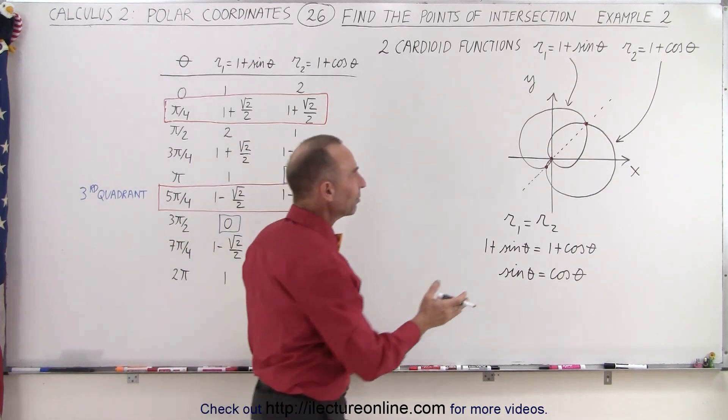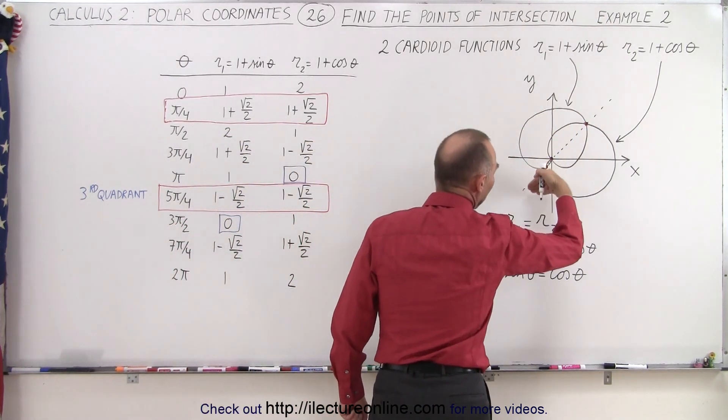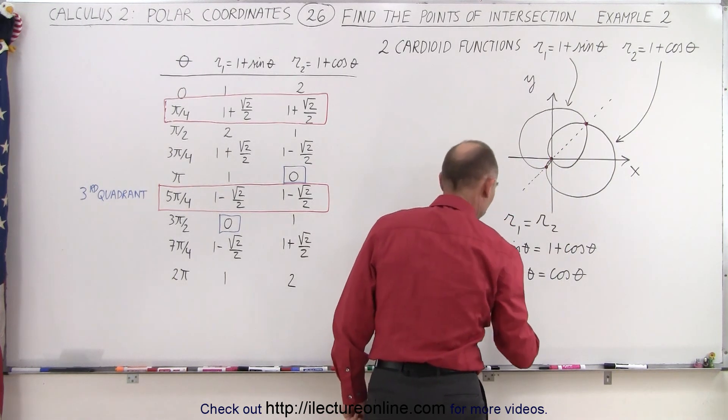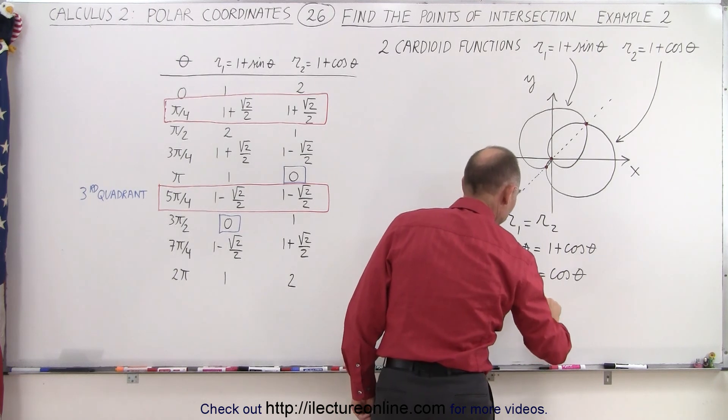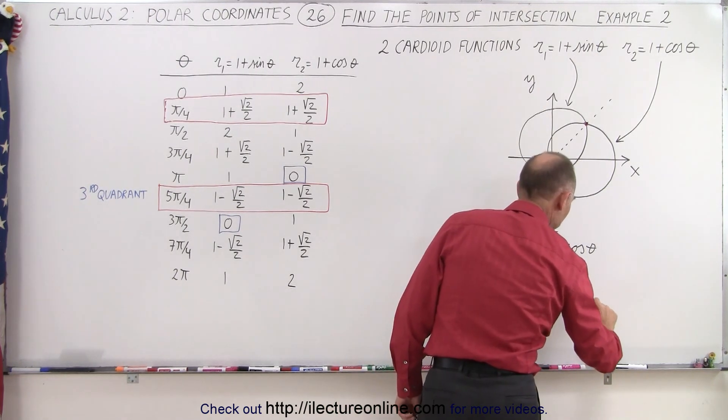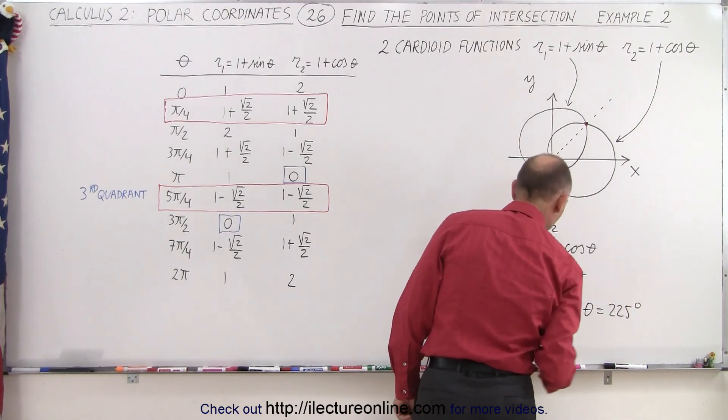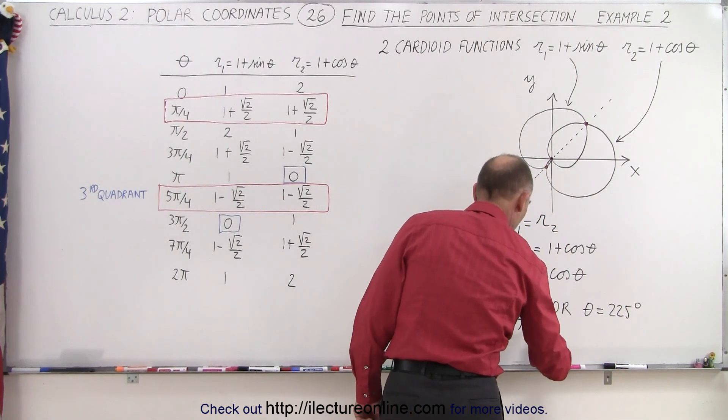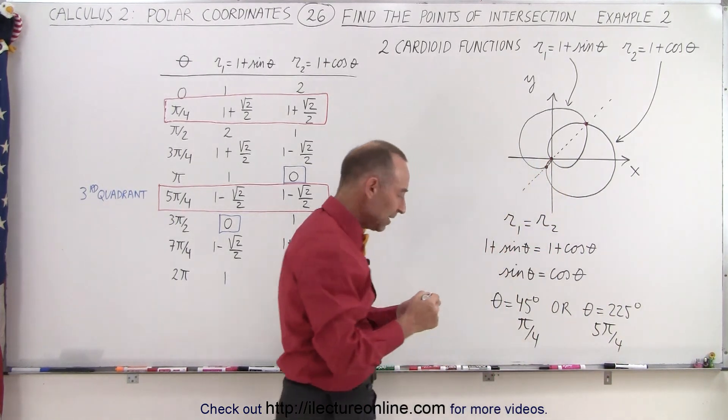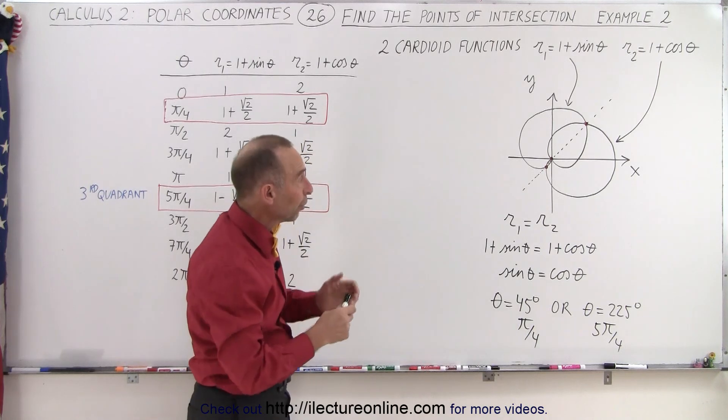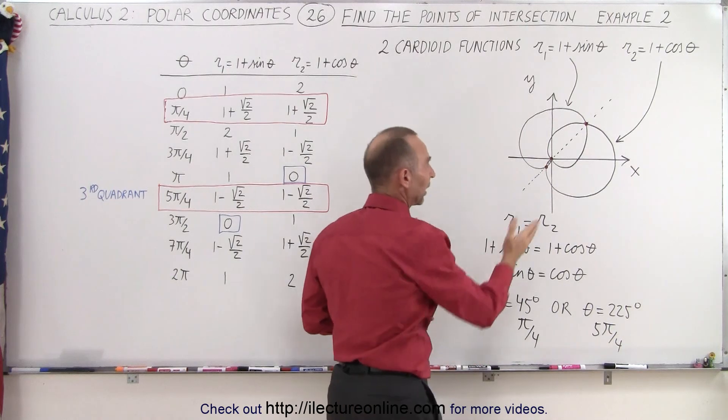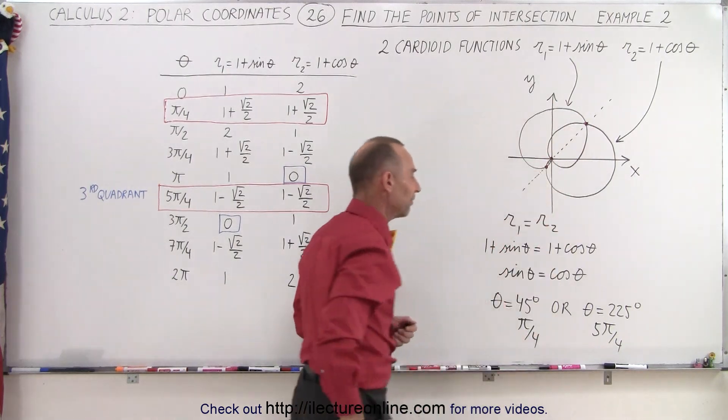So for which values is the sine of theta equal to the cosine of theta? And we know that's the case at 45 degrees, but it's also the case at 45 plus 180 or 225 degrees. In other words, theta equals 45 degrees or we have the two equal to each other again at theta being equal to 225 degrees. So it would be π over 4 and 5π over 4. So using this technique does allow us to find two of the three points of intersection. This one right here and this one down here at 45 and at 225 degrees.